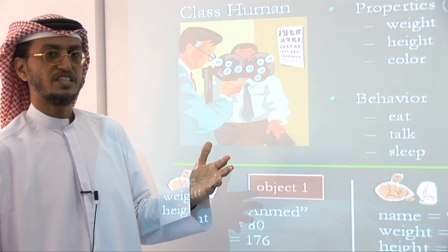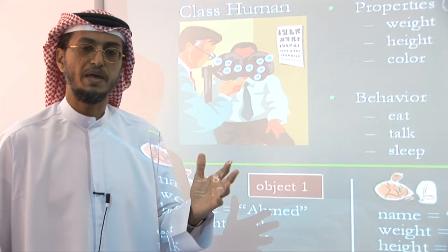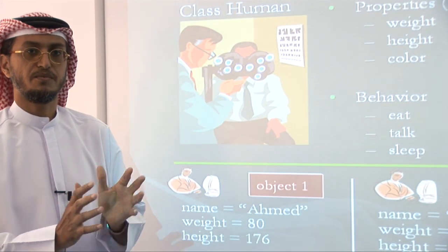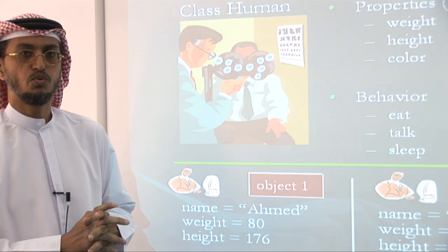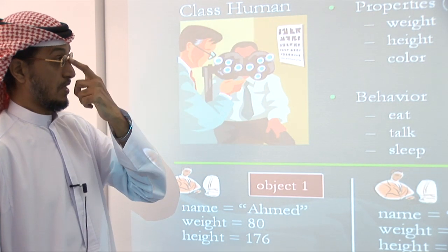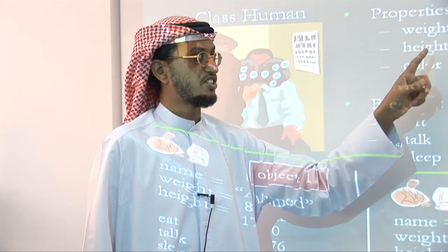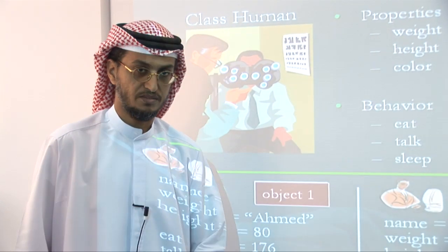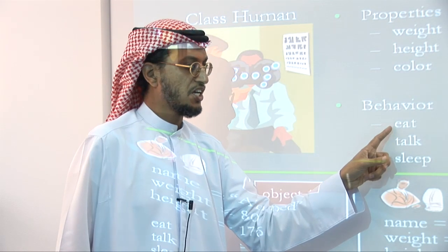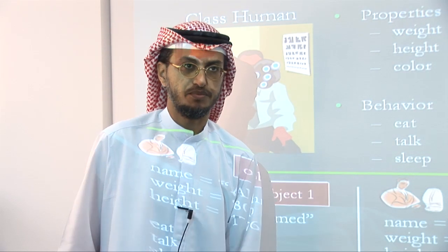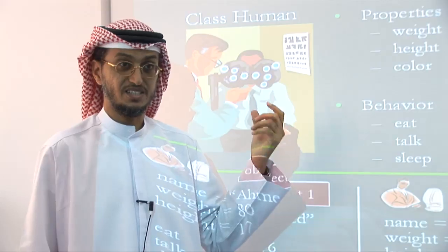This gives us the chance to define the class that makes the possibility of sharing a model or template within objects. Class human represents the model for us. Class human represents properties of humans such as weight, height, color and the behavior such as eat, talk and sleep. A class is a model, template or a blueprint from which objects are created or instantiated.